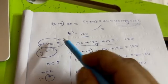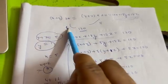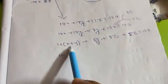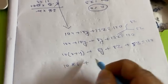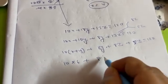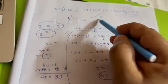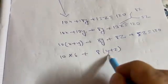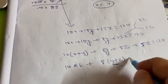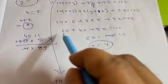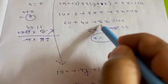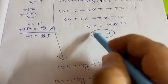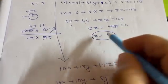Substituting x + y = 6 and y + z = 5: 10 × 6 + 8 × 5 + 5z = 120, which gives 60 + 40 + 5z = 120, so 5z = 20, and z equals 4. The efficiency of Z is 4.